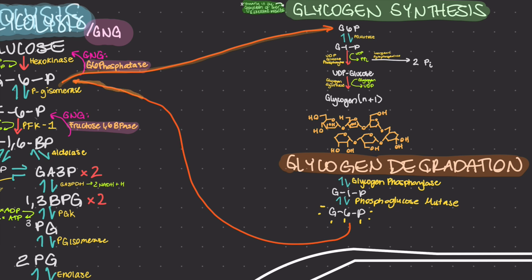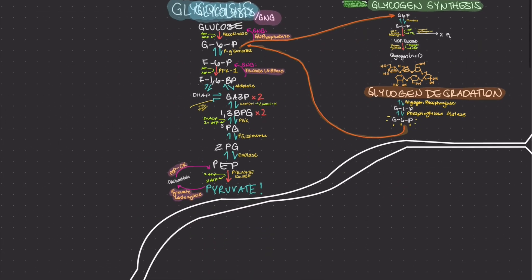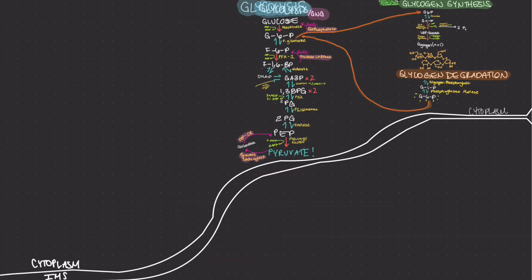If the cell needs energy for muscles or the liver, it can be released into the bloodstream straight from glycogen degradation. It's important to think about the big picture.